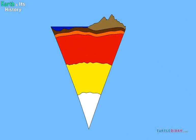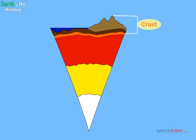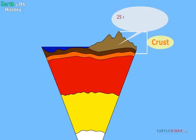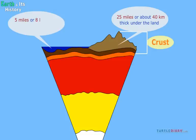We live on top of the Earth's crust. The crust is made of rock and soil. It is about 25 miles or about 40 kilometers thick under the land. It is about 5 miles or 8 kilometers thick under the oceans.